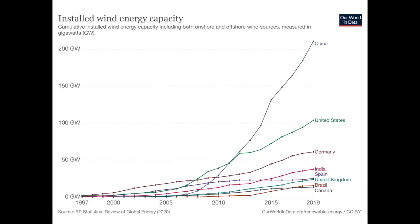The US is also a world leader in wind energy. This graph shows our wind energy capacity relative to other leading wind energy producers. Only China has a higher wind energy capacity and a more rapid rise. Notably, the US's impressive wind energy capacity has been achieved virtually entirely by onshore wind, and as we'll talk about next, offshore wind offers even more potential.